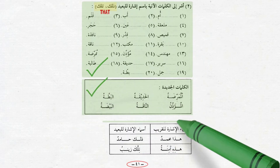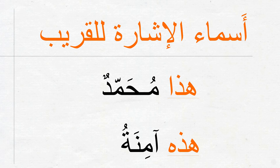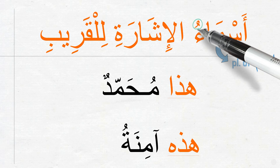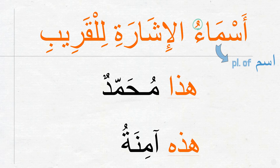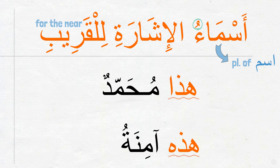These were the new words of the lesson. Now at the bottom of the page, we have a table. In the right column we have two example sentences: هَذَا مُحَمَّدٌ and هَذِهِ آمِنَةُ. Above these, a note says أَسْمَاءُ الْإِشَارَةِ لِلْقَرِيبِ — أَسْمَاءٌ is the plural of اسم, and لِلْقَرِيبِ is a جار ومجرور phrase meaning 'for the near'. So هَذَا and هَذِهِ are the demonstrative اسم words for the near, used to point at people or things that are close.